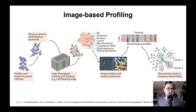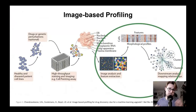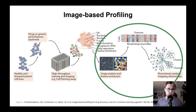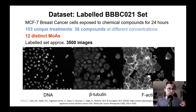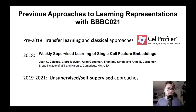We are working in the field of image-based profiling, especially where we have fluorescent stain microscopy images, and we're looking to extract and learn meaningful profiles or phenotypic representations from these cells to perform downstream tasks. We're using the BBC21 dataset, which has been used extensively with many models. The key thing is that there are 103 unique treatments, 38 compounds, and 12 distinct mechanisms of action. Here are the channels, and there have been many approaches taken on this dataset, such as classical approaches including CellProfiler and transfer learning algorithms.